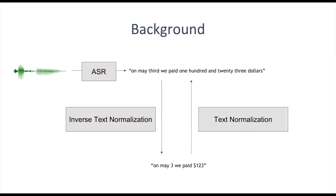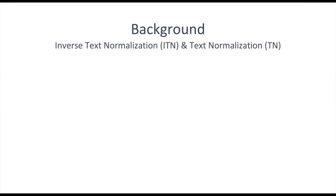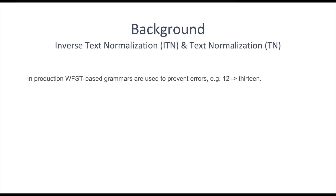The opposite direction is called text normalization and is often used as a pre-processing step to aid a text-to-speech model. In production, both inverse text normalization and text normalization systems are often rule-based, using weighted finite state grammars. This is to better control the behavior and prevent unrecoverable errors that change the input semantics — for example, by mistakenly converting 12 to 13.